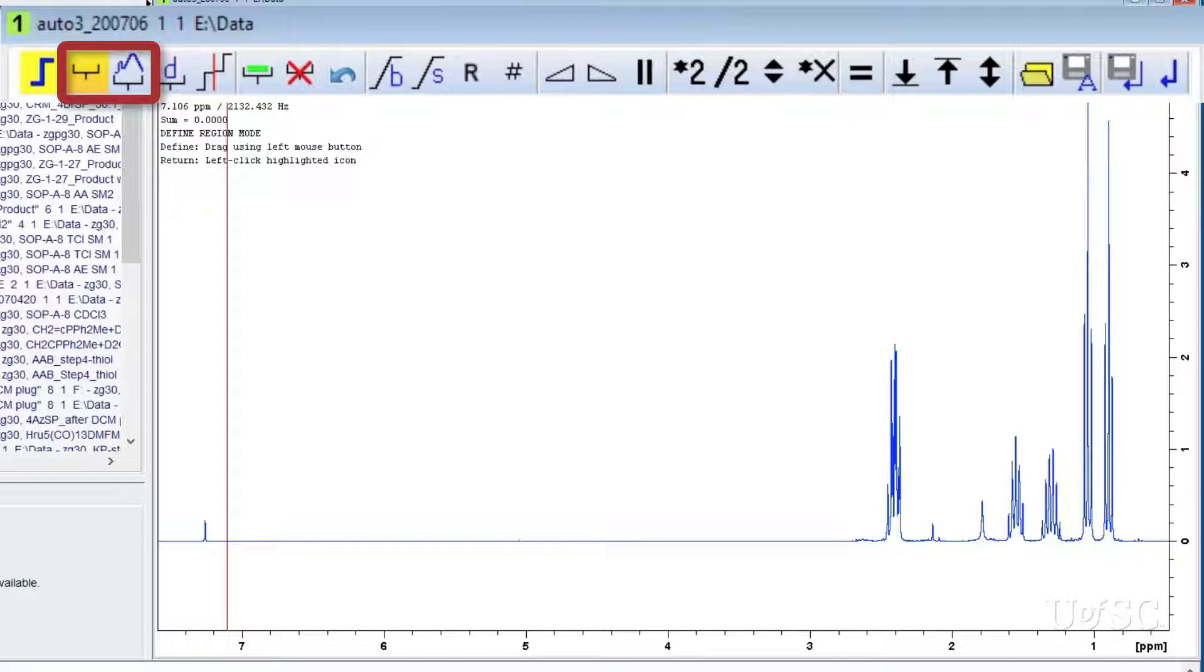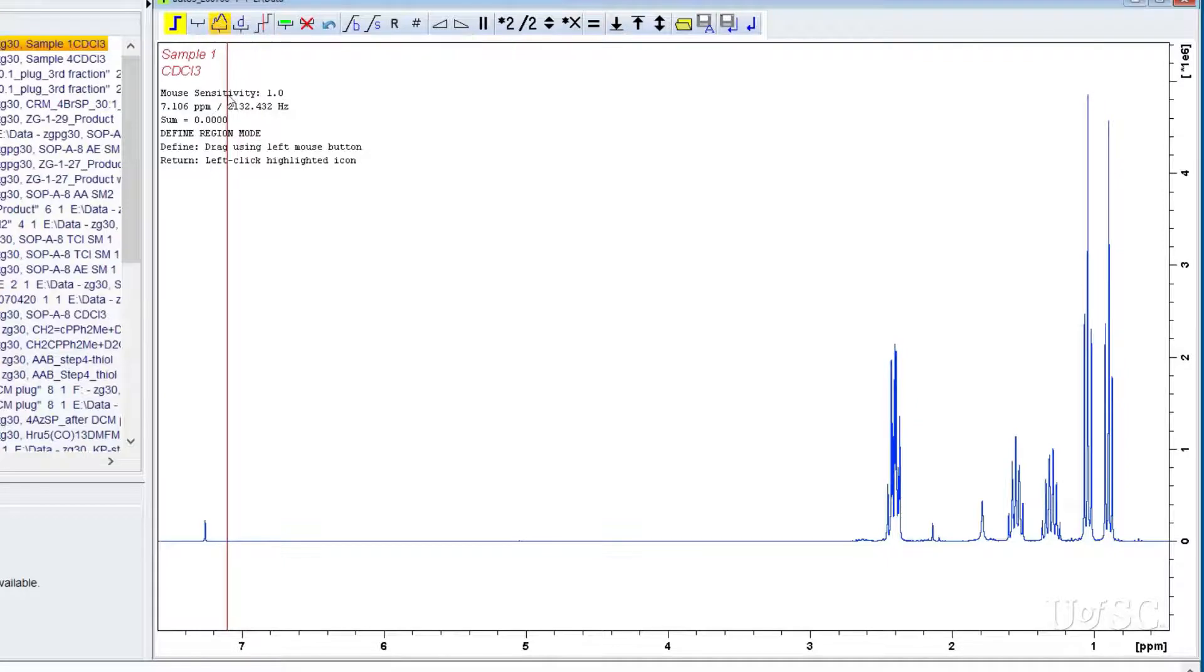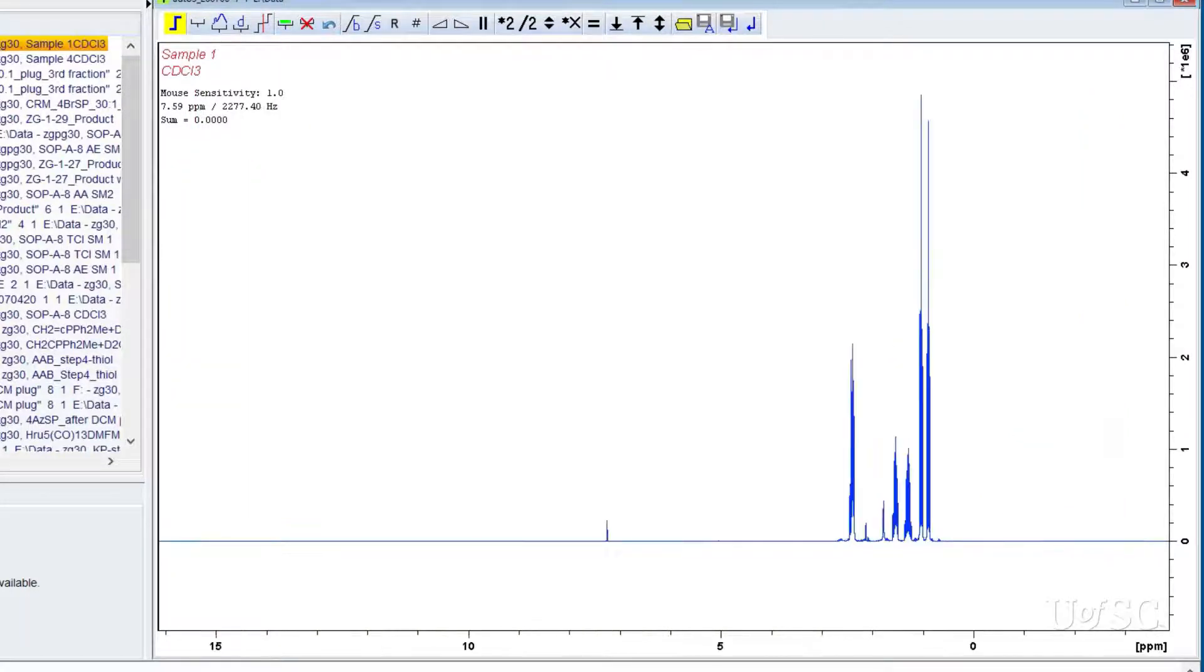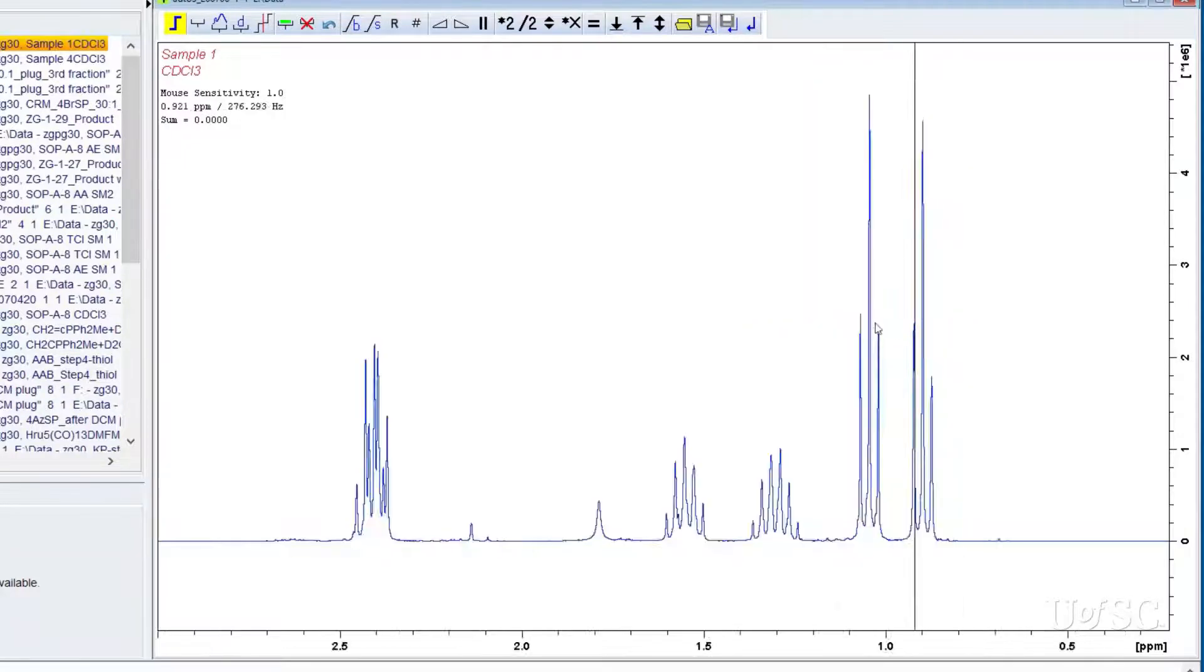It is also useful if the peaks are on a tail of a larger nearby peak. Both icons will turn yellow when their function is active. You can turn them off with a left mouse click. When no tool is active you can use the normal TopSpin expansion tools to adjust the spectrum for easier region creation.